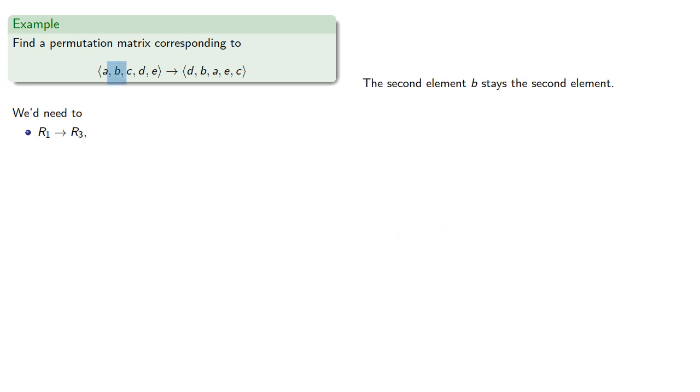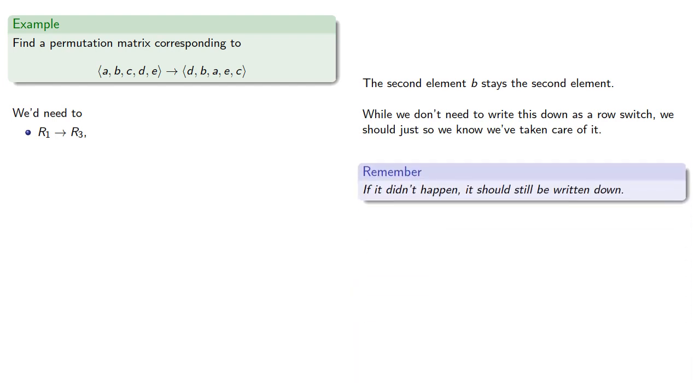Next, the second element B stays the second element. Strictly speaking, we don't need to write this down as a row switch, but we should just so we know we've taken care of it. Remember, if it didn't happen, it should still be written down. So we'll indicate that R2 goes to R2.